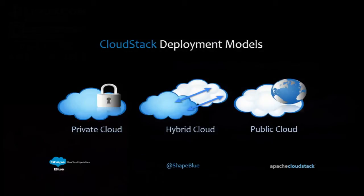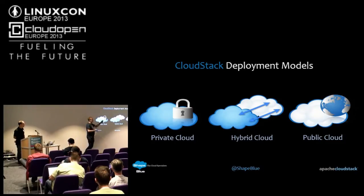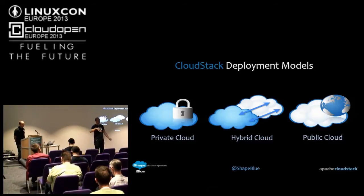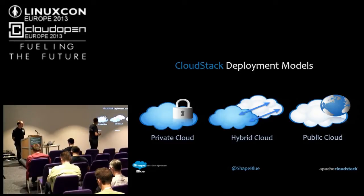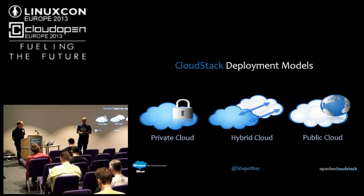So what can we use it for? Three stovepipes, really. Public cloud — mainly service providers, managed service providers, and traditional internet service providers who want self-service buying of virtual resources and networking through a public-facing user interface. Private cloud — more people wanting to do internal automation. And obviously a combination of those: the hybrid model.